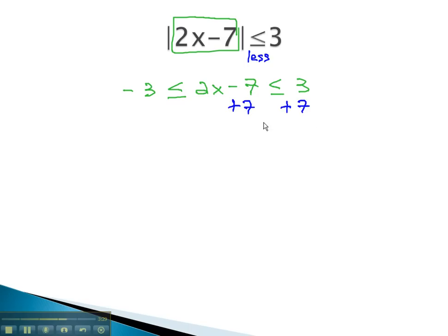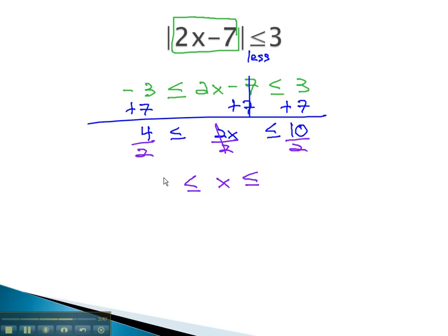Adding 7 to all three parts, because it's a tripartite inequality, gives us 4 is less than or equal to 2x is less than or equal to 10. Finally, dividing all parts by 2 will isolate the variable in the middle. We end up with 2 is less than or equal to x, which is less than or equal to 5.